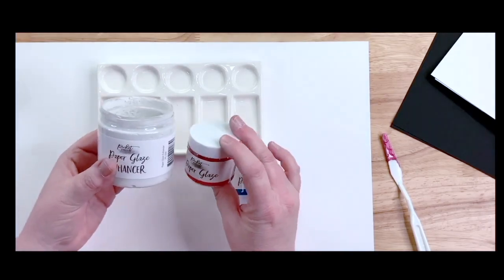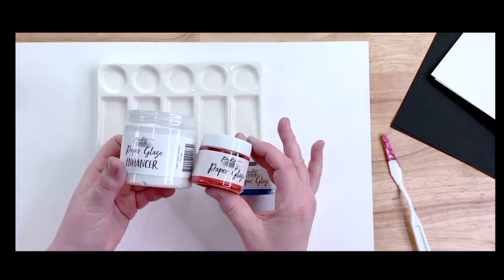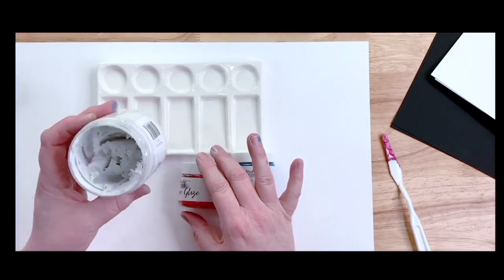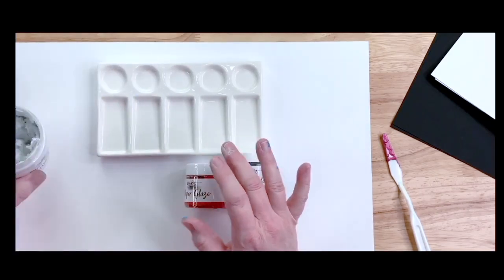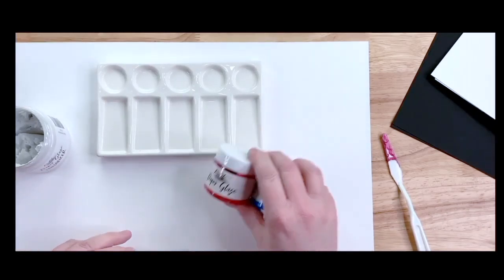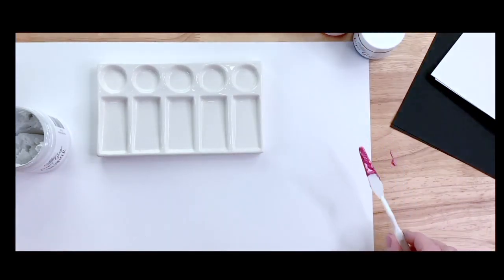You can see the difference in the jars. Very, very simple. And Paper Glaze Enhancer is very light. It's extremely light. It won't come out in your jar. We're going to start by mixing some colors. And what's the ratio? One to one.